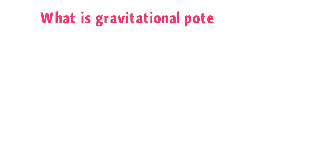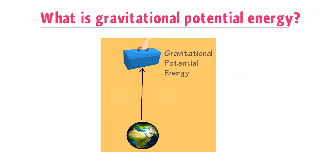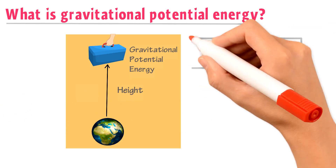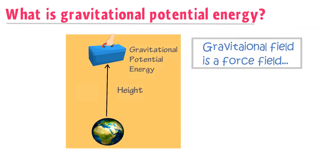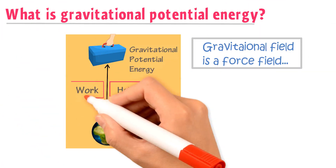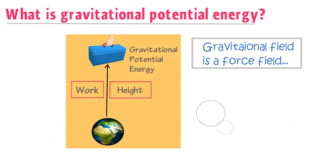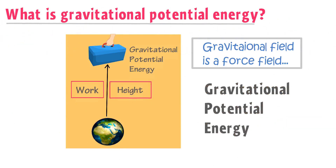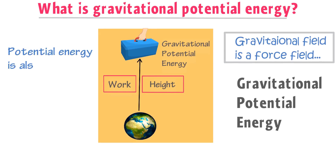What is Gravitational Potential Energy? If a body possesses Gravitational Potential Energy, it will be due to the height of this body above the Earth's surface. As we know, Gravitational Field is a force field. When you do some sort of work on a body and change the height of the body, this work against gravity stores in the body as Gravitational Potential Energy.